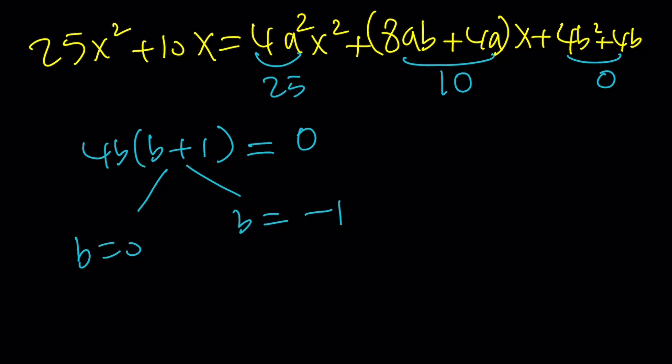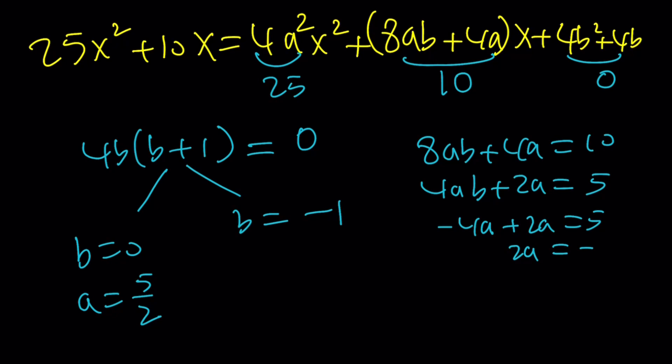And then, I'm going to be looking at the second equation. And that's 8ab + 4a = 10. If you want, divide both sides by 2. That's kind of like I have OCD, so I've got to do it. And now, replace b with 0. If b=0, we're going to get 2a=5. So, a is going to be 5/2. If b=-1, then I'm going to get -4a + 2a = 5, which is -2a = 5. And it's going to be -5/2. So, they're kind of like opposites of each other. And these two make a good pair.